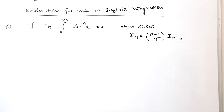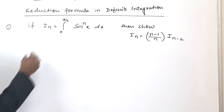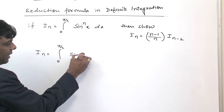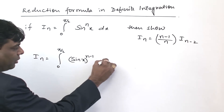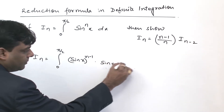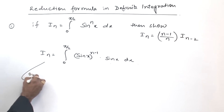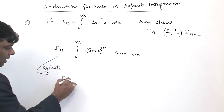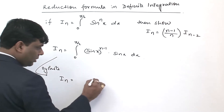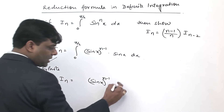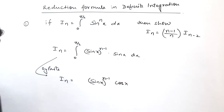Let me show it. I_n is equal to the integral from 0 to π/2 of sin x to the power n minus 1 into sin x dx. We write sin x to the power n minus 1 and integrate sin x, whose integration is minus cos x.